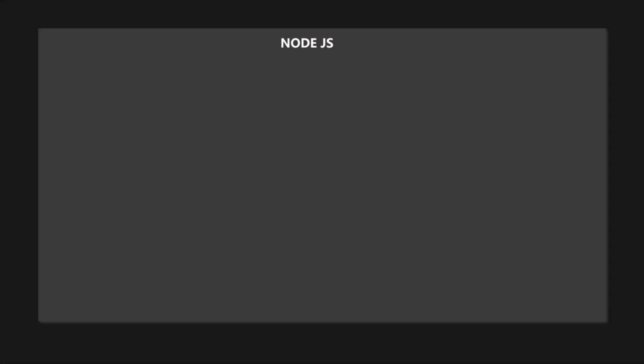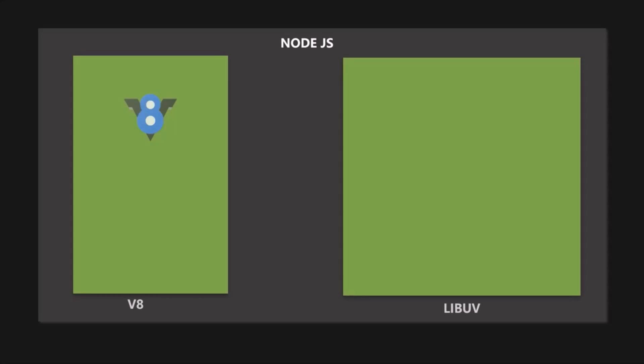Here, I am going to represent the architecture of Node.js in terms of Node dependencies. Node dependencies are basically some libraries on which Node.js depends in order to work properly. Node.js is a JavaScript runtime and this runtime has several dependencies, the most important of which are the V8 JavaScript engine and LibUV.